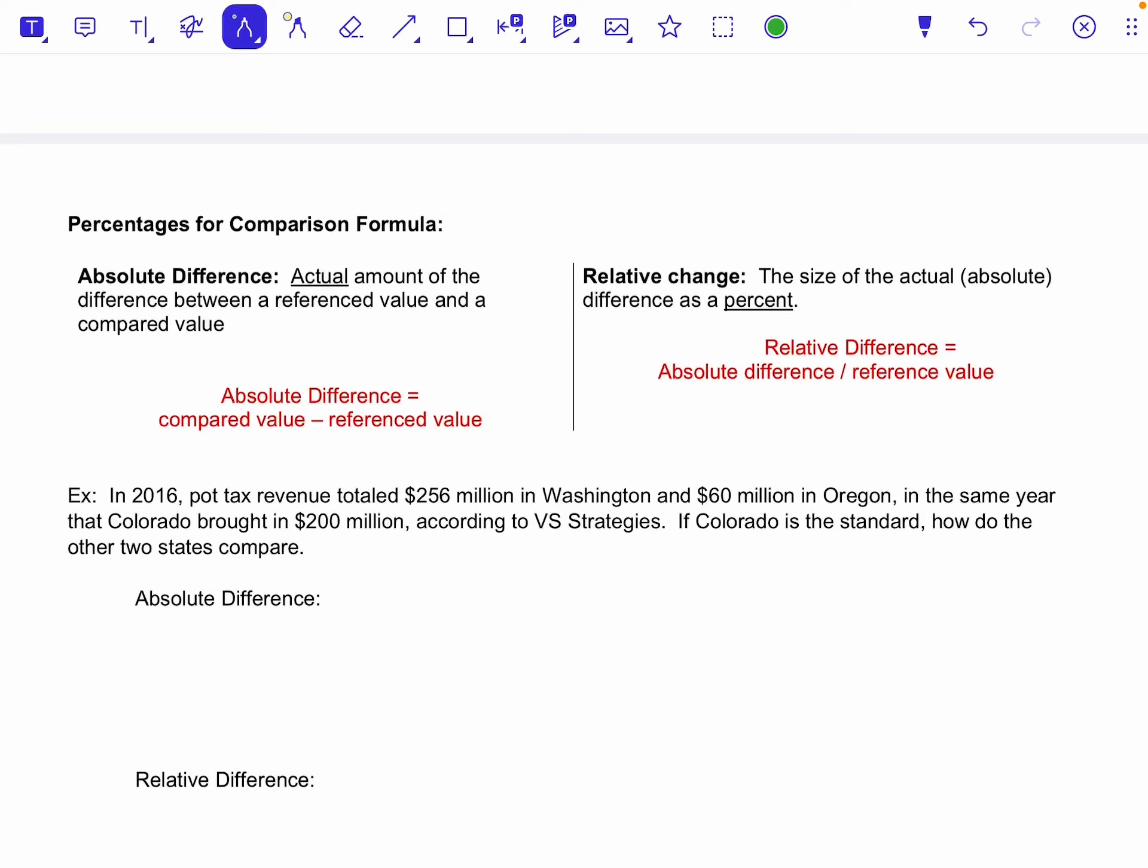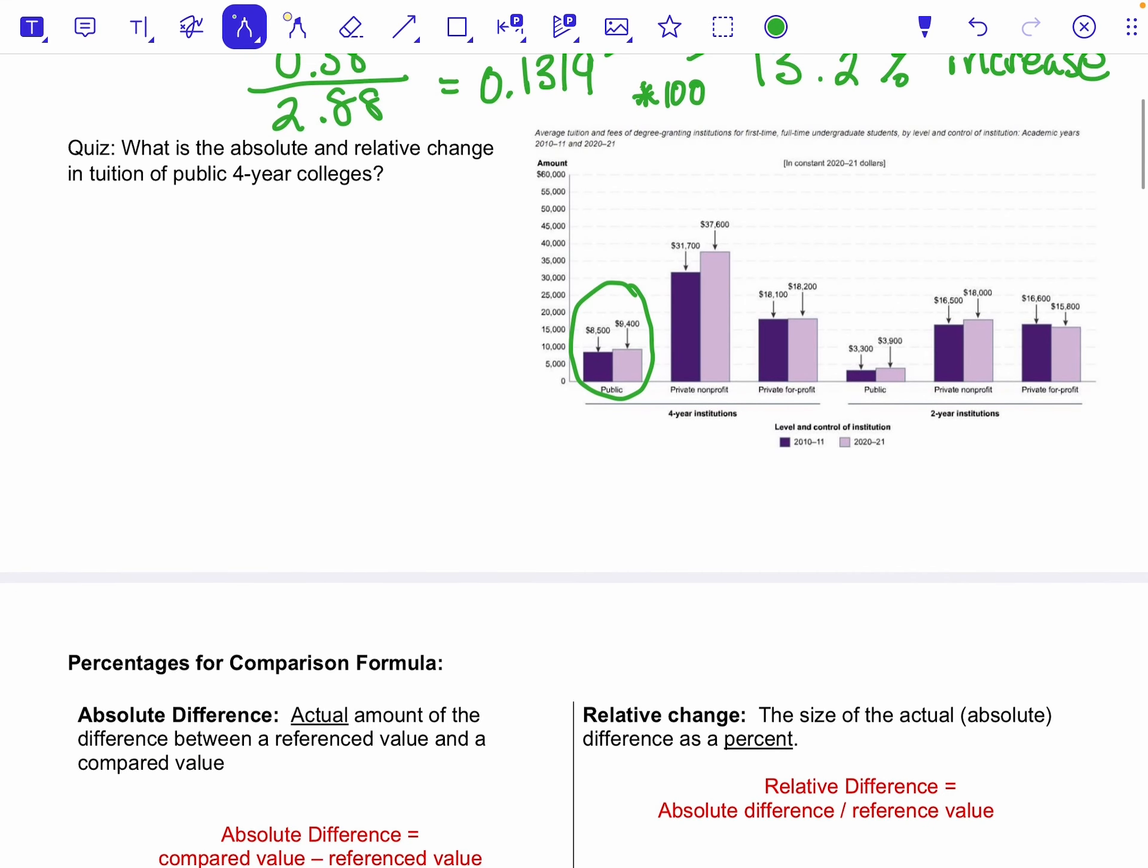This video is going to focus on percents and how we use them to compare values. If we think back to the last video, we were looking at how to compare within one quality of public institutions - that sort of growth within there. This next set of formulas, instead of comparing public to public growth within the 10-year period, what if I wanted to compare public to private?